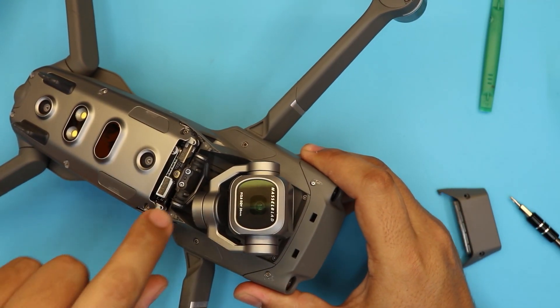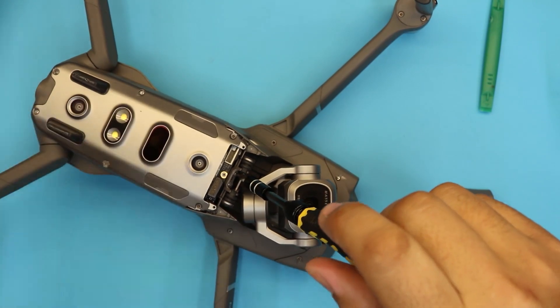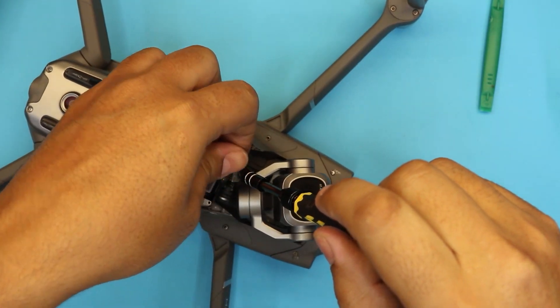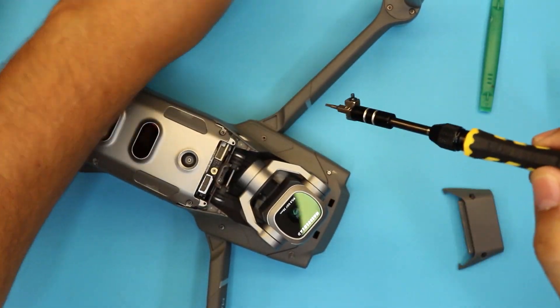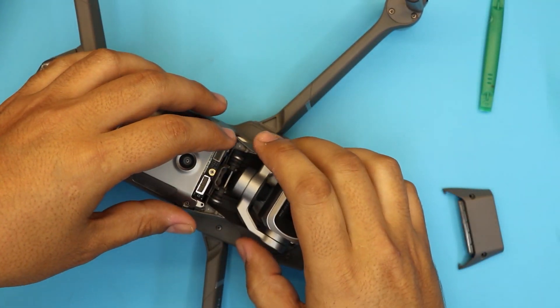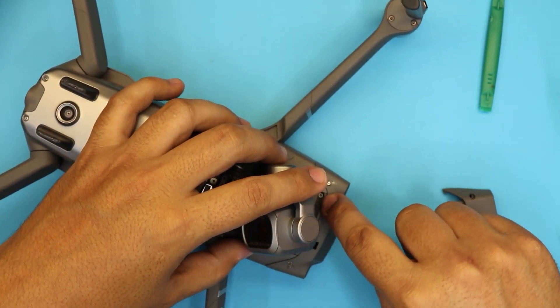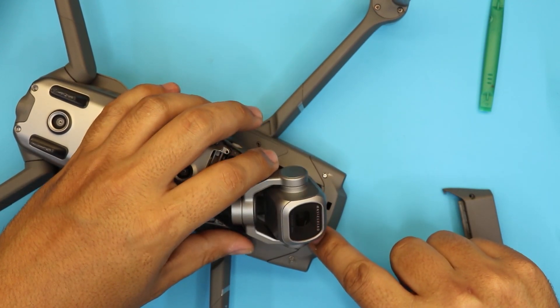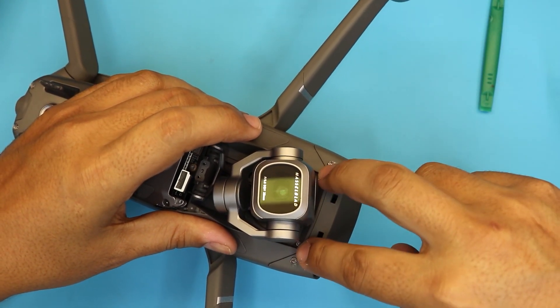Next, you're gonna remove these two screws right down there. I'm gonna use a magnet. Now once you remove those two, also you have to remove the screw right here, this one, and the screw right on the other side. There's two in the front.